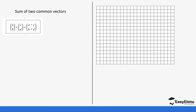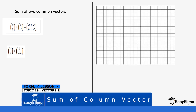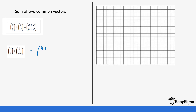For example, you're going to add the x-values: four plus three, and then add the y-values: two plus negative four. This gives us seven for the x, and two plus negative four gives us negative two, because we are adding a positive value to a larger negative value.